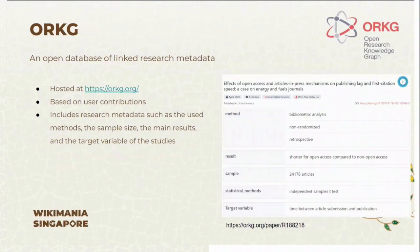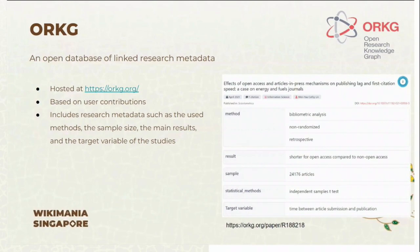However, what Wikicite does not support is what is included inside the paper — this means the research metadata. For example, it does not involve the reused methods in a research paper, the sample size, the main results, the target variables, etc. However, there is another resource called ORKG — the Open Research Knowledge Graph — that is an open database of linked research metadata, structured in RDF format, just like Wikidata.